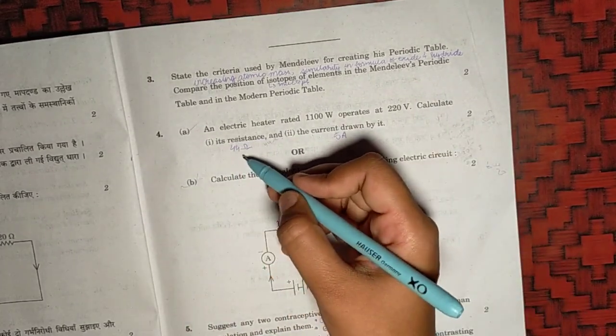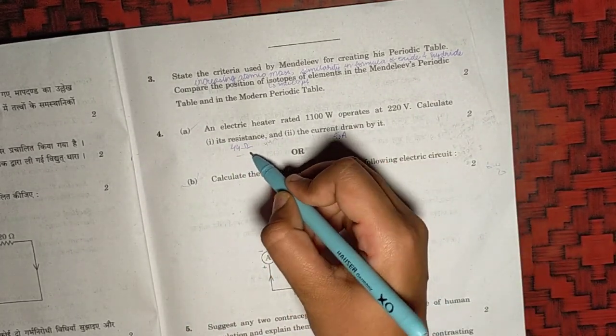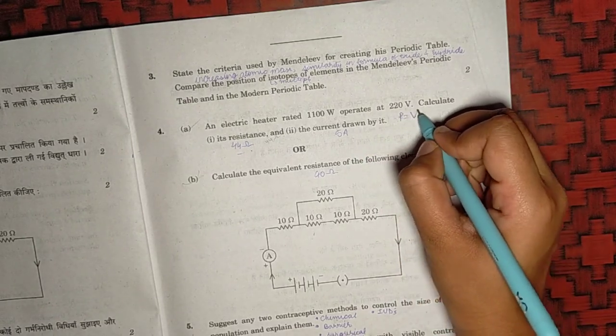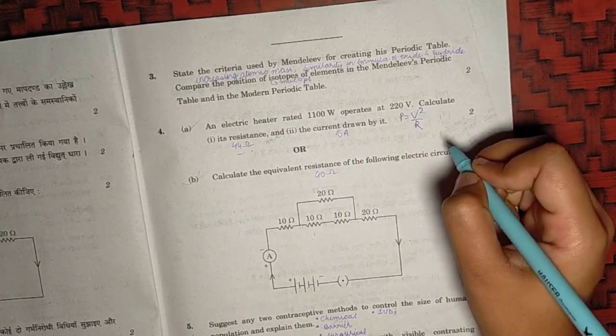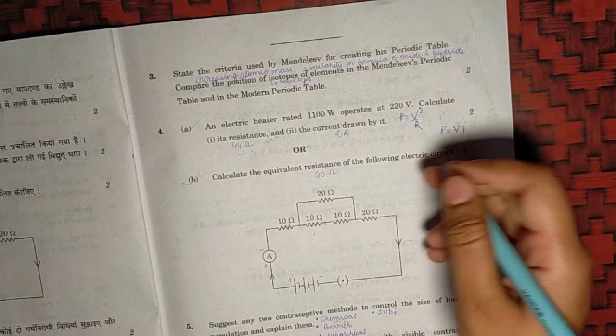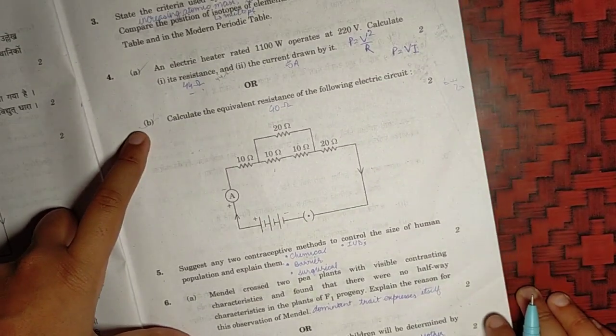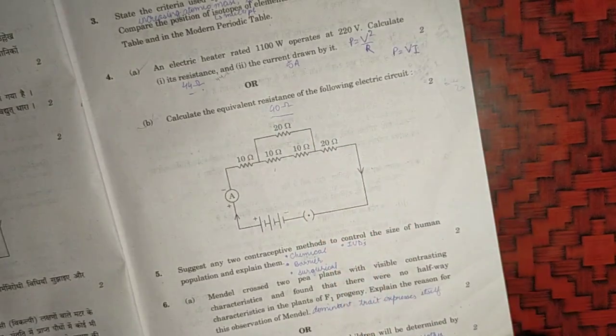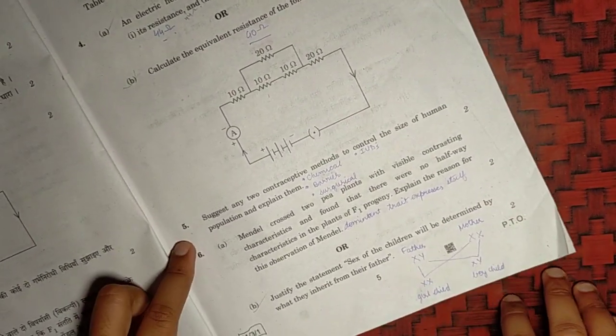For the fourth question, resistance will come out to be 44 Ohm and the current drawn will be 5 Ampere. You will find it by P equals to V square by R and P equals to V by I. You can easily find both the values. For the B part, you can find the resistance which will come out to be 40 Ohm.